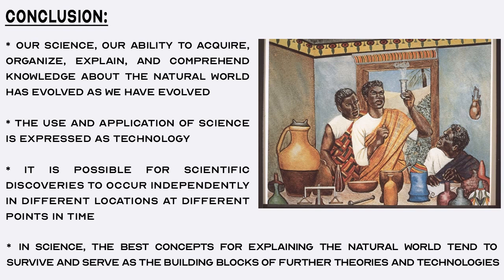Just as it is possible for certain biological traits to evolve independently at different points in time, it is also possible for scientific discoveries to occur independently in different locations at different points in time, and this is investigated through ethnoscience. For example, the Iron Age occurred in different regions at different points in time without people from those regions making contact with one another. Just as human evolution is not a linear progression from primitive to advanced, the evolution of science is not a linear progression either. Natural selection is a key mechanism in evolution whereby organisms better adapted to their environment tend to survive and produce more offspring. In science, the best concepts for explaining the natural world tend to survive and serve as the building blocks for further scientific theories and technologies.